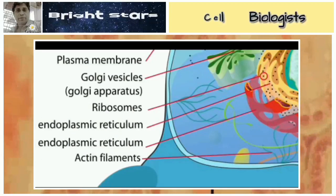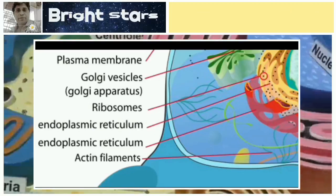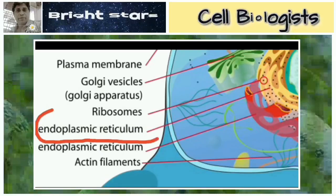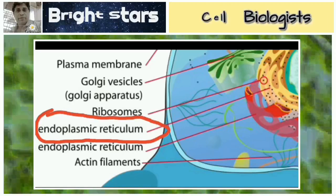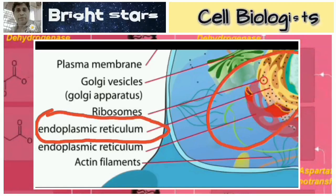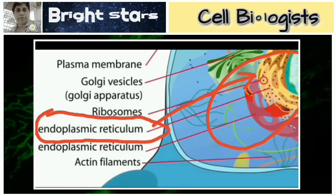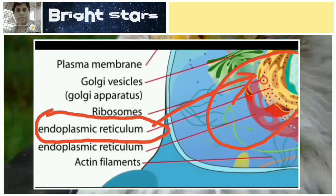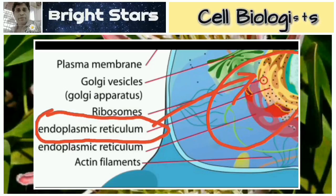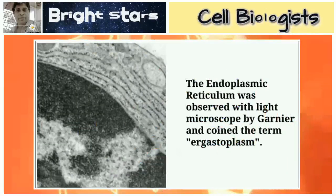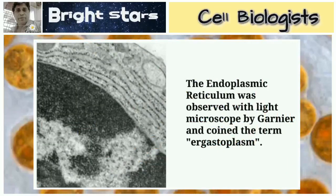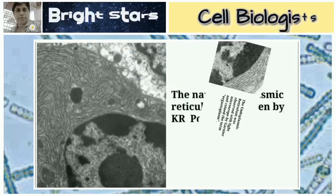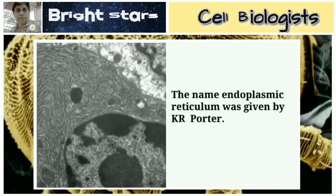The skeletal network present around the nucleus is called the endoplasmic reticulum — a network-like structure that may be smooth or rough, responsible for the preparation of proteins and lipids. The endoplasmic reticulum was observed with a light microscope by Garnier, who coined the term 'ergastoplasm.' The name 'endoplasmic reticulum' was given by K.R. Porter.